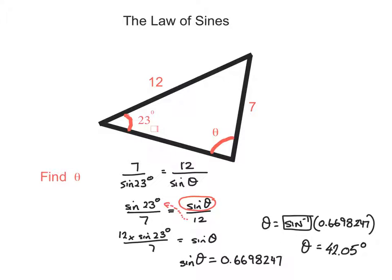Now the problem is here, is that in quadrant 1, 2, 3, and 4, sine is positive in quadrants 1 and 2, we know that. And we know that both of these angles equal 42.05.